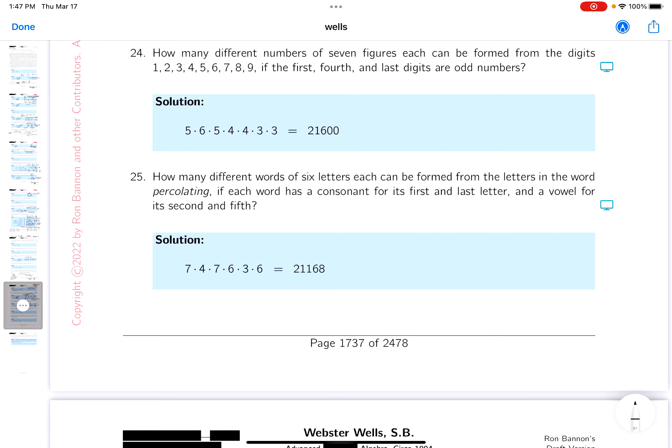Okay, how many different numbers of seven figures? Let me write this down. One, two, three, four, five, six, seven can be formed from the digits. Well, they give me the digits one through nine.